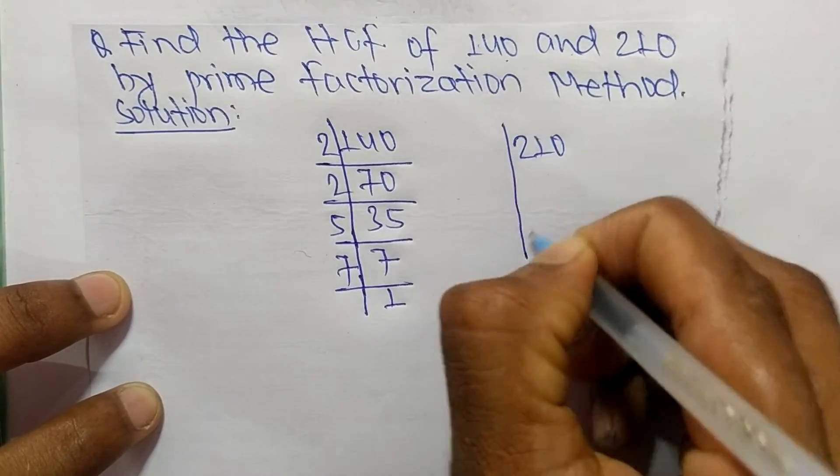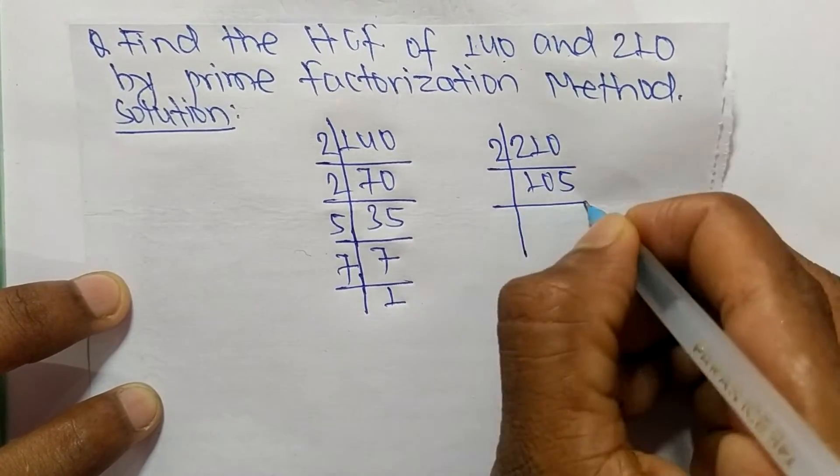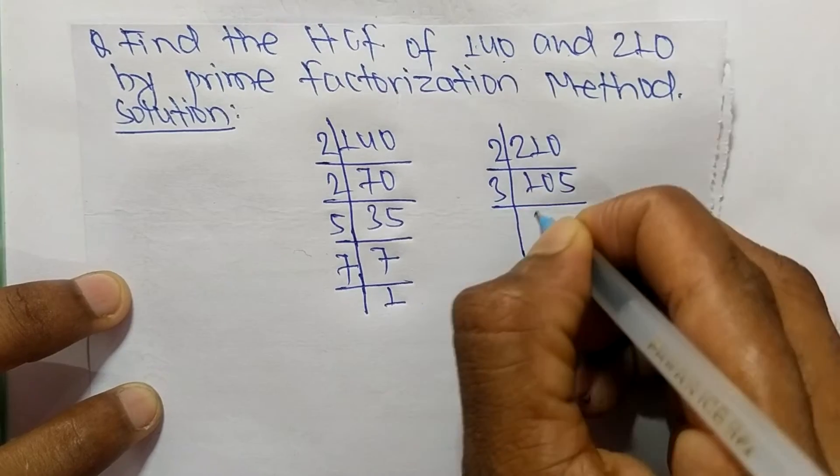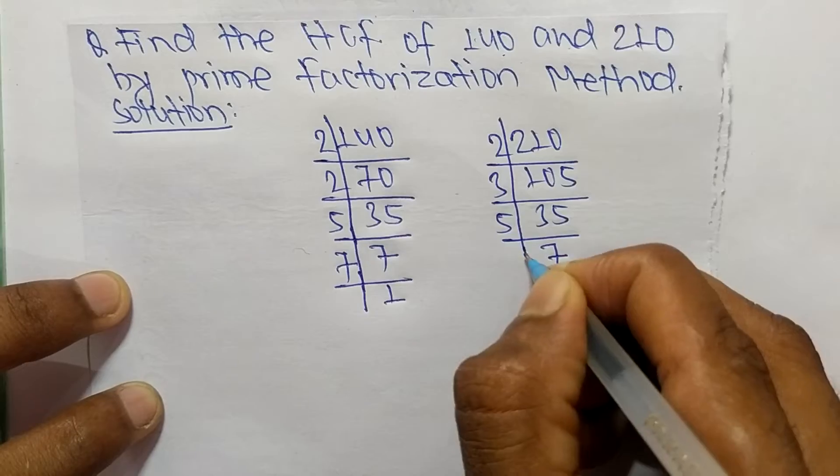The prime factors of 210 are: 2 times 105 equals 210, 3 times 35 equals 105, 5 times 7 equals 35, and 7 times 1 equals 7.